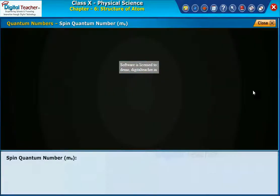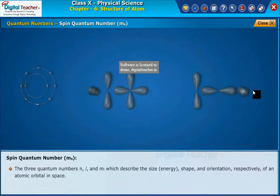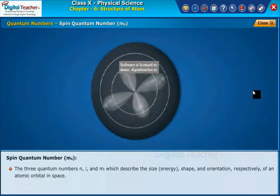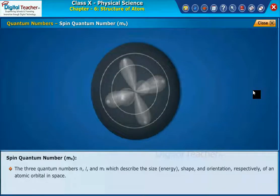Spin quantum number. The three quantum numbers n, l and m_l, which describe the size, energy, shape and orientation respectively of an atomic orbital in space.